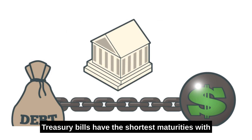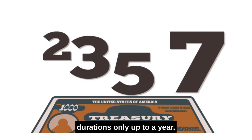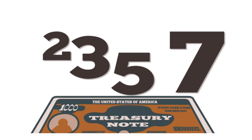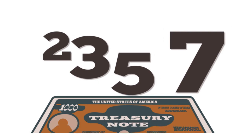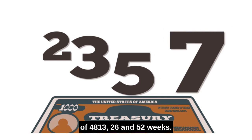Treasury bills, or T-bills, have the shortest maturities, with durations only up to a year. The Treasury offers T-bills with maturities of 4, 8, 13, 26, and 52 weeks.